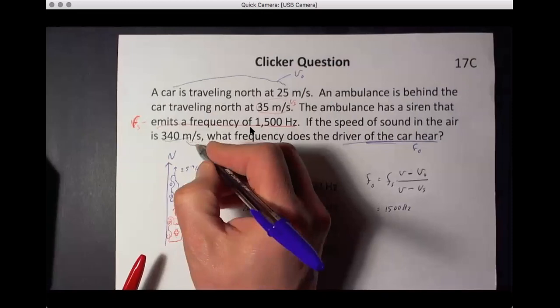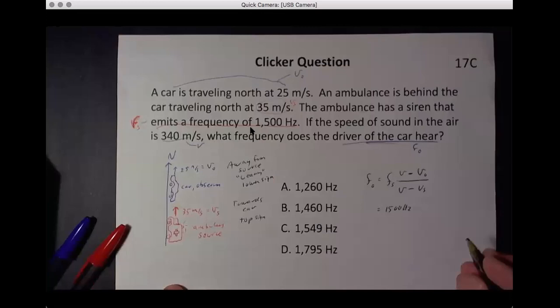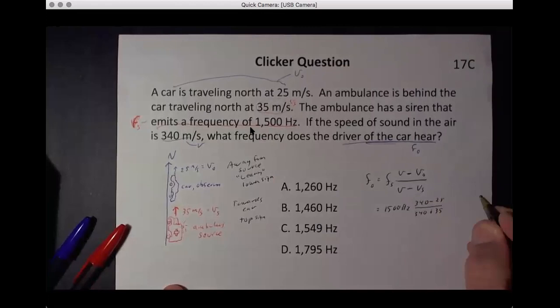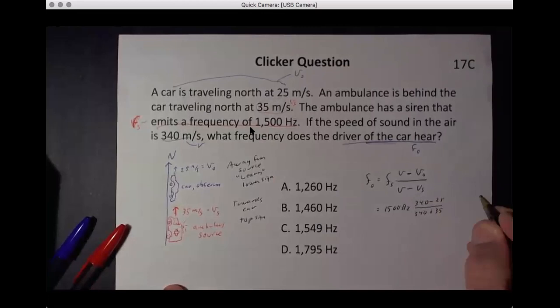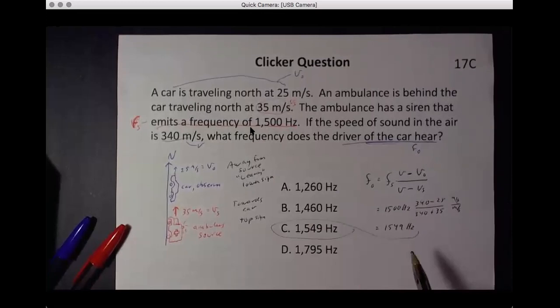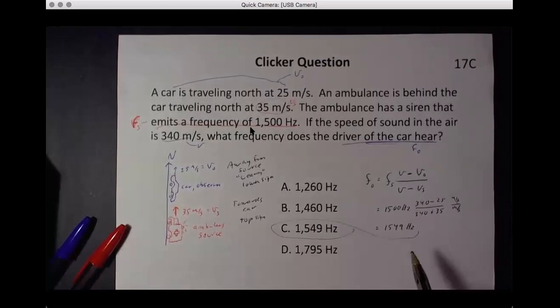So now I think we've got everything else. And this is just V. And so it's 1500 Hertz, 340 minus 25, over 340 plus 35. These are all in meters per second over meters per second, which are going to cancel out. And you plug in the numbers, you get 1549 Hertz. And you say, hmm, that is bigger than 1500 Hertz. They must be getting closer together. And that's true. This is catching up to that one in 10 meters per second. So they ought to get closer together. So this ought to go up and it does like it should.